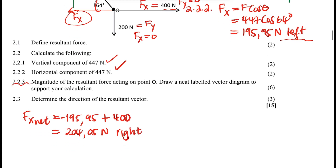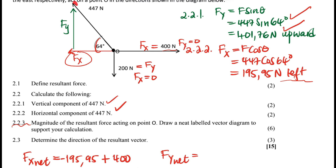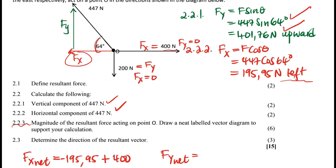For FY net, we add all the Y components. We have the vertical component of 447 N which is 401.76 N upward (positive), and the 200 N force going to the south (negative). The 400 N force has no Y component. So FY net = 401.76 - 200 = 201.76 N upward.